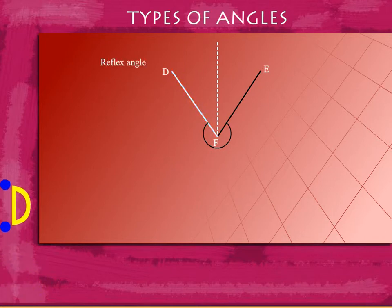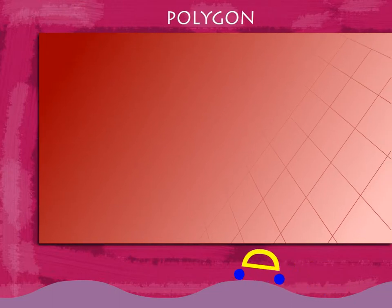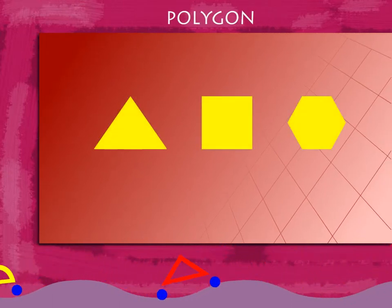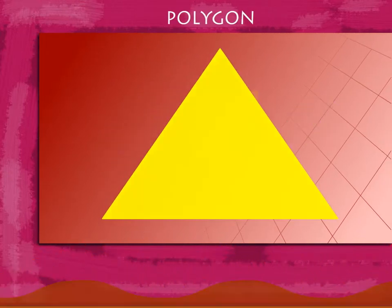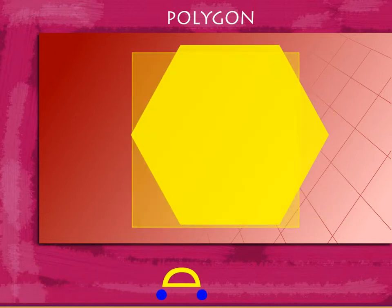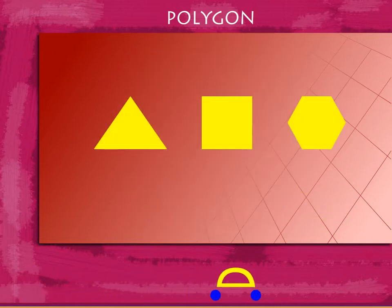Reflex angles are angles measuring between 180 degrees and 360 degrees. Polygon: Here are some closed figures. A simple closed figure made by line segments is called a polygon.